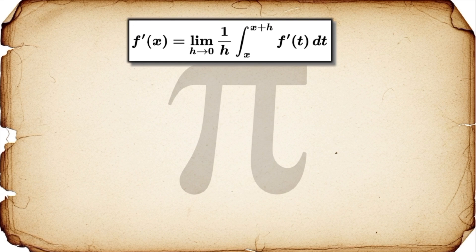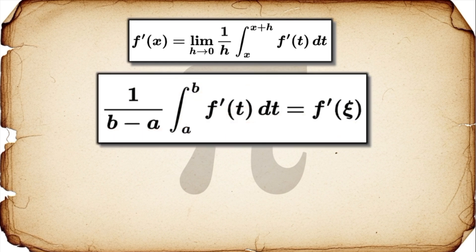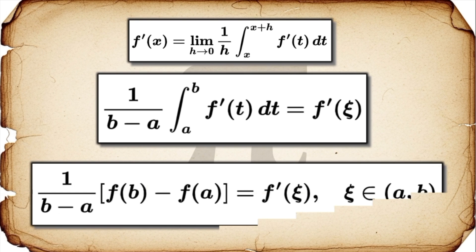And there's another theorem, the mean value theorem for integrals, that says the average value of any continuous function over an interval has to be equal to the function's actual value at some point in that interval. At the same time, we know that this average is also just the good old rise over run slope. So when you put those two facts together, that this average equals both of these things, the mean value theorem for derivatives just appears. It falls right out of the logic, almost effortlessly.